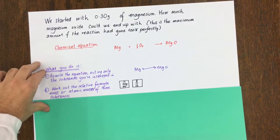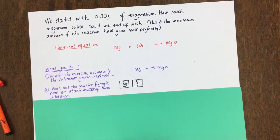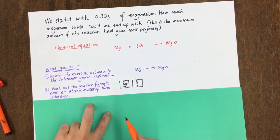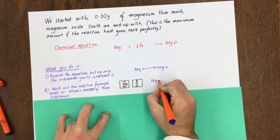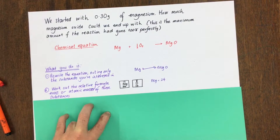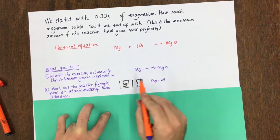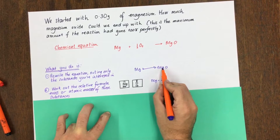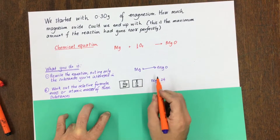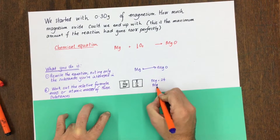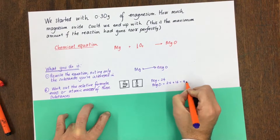Step two: work out the relative formula mass or atomic masses of these substances. From your periodic table, the mass of magnesium is 24, and oxygen is 16. So the mass of magnesium is 24. The mass of magnesium oxide must be magnesium (24) plus oxygen (16), so magnesium oxide equals 24 plus 16, which equals 40.